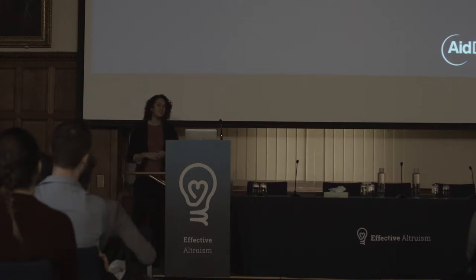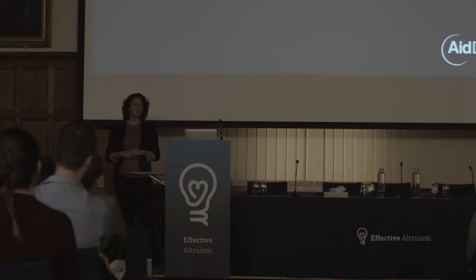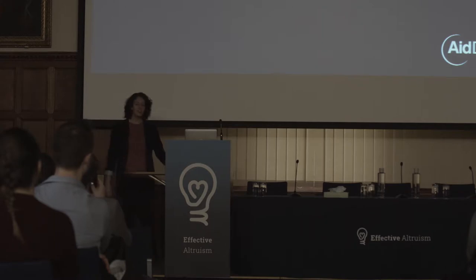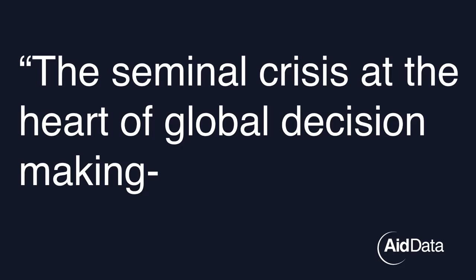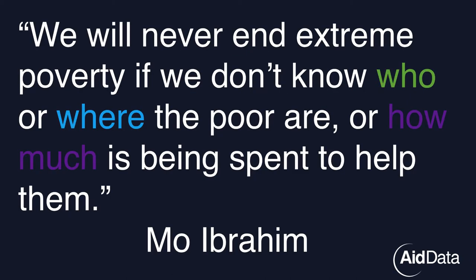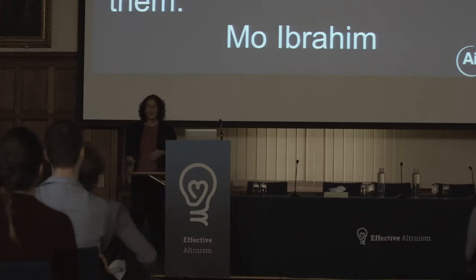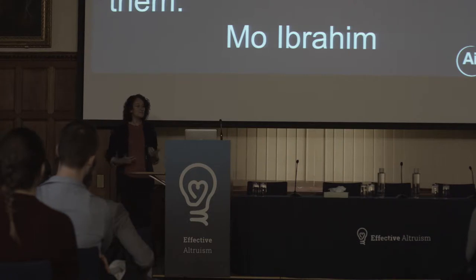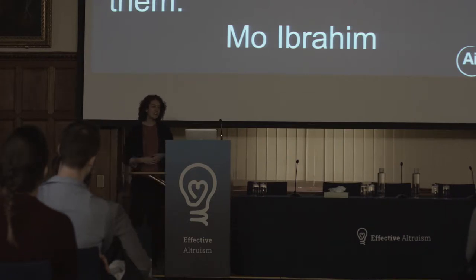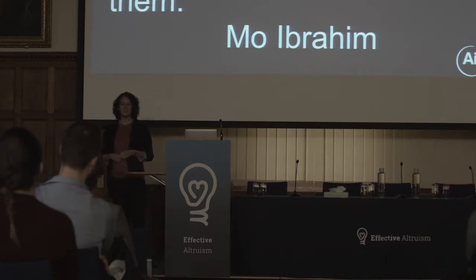The bad news is that the dividends of the data revolution have not been evenly shared. Low- and middle-income countries are still plagued by poor quality and missing data, which philanthropist Mo Ibrahim termed the seminal crisis at the heart of global decision-making — the crisis of poor data. Ibrahim concludes we'll never end extreme poverty if we don't know who or where the poor are. I think the development community needs to leverage open data, and I'll share promising innovations that AidData and partners are working on.